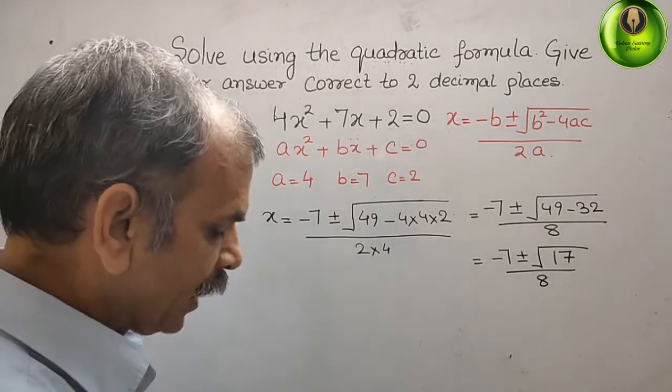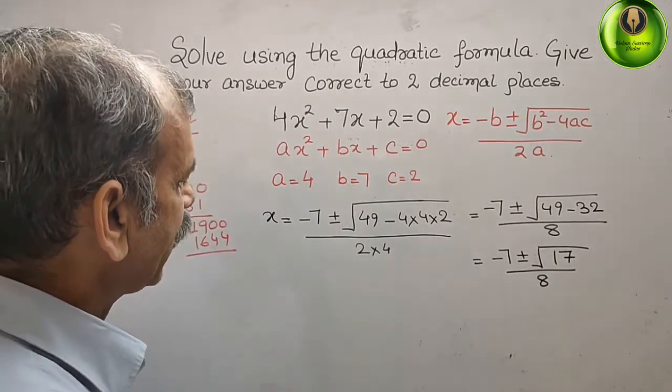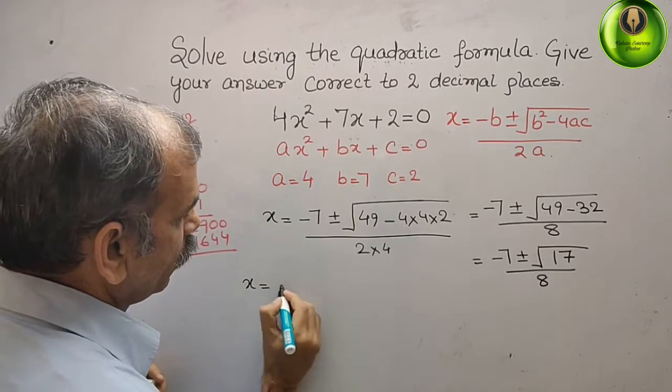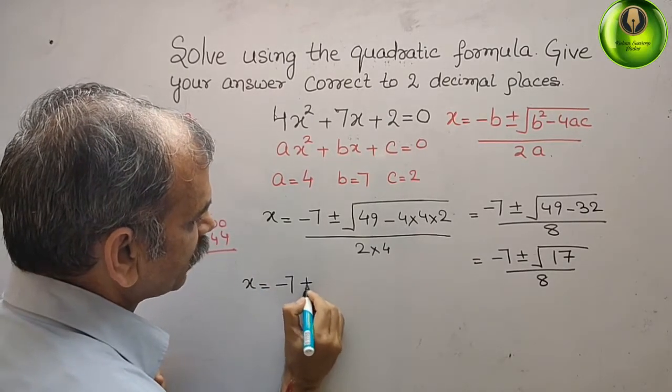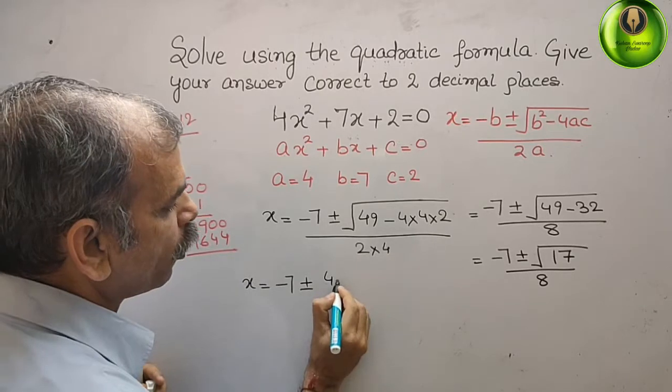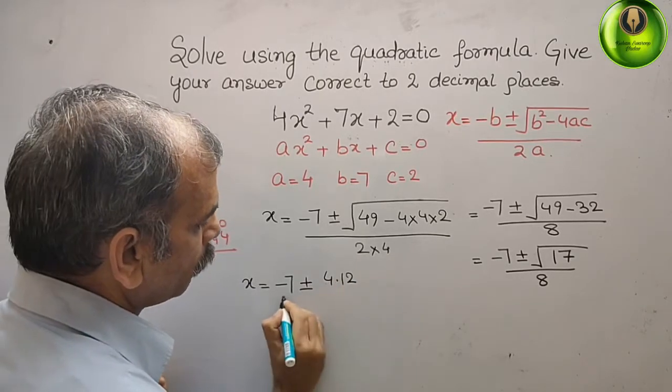So that means what we will get? We get x = (-7 ± 4.12) / 8.